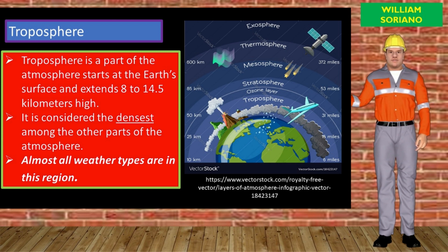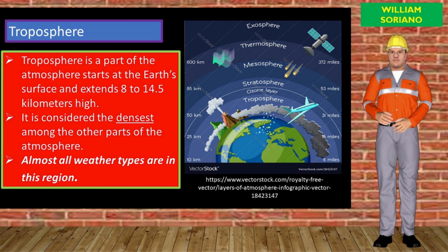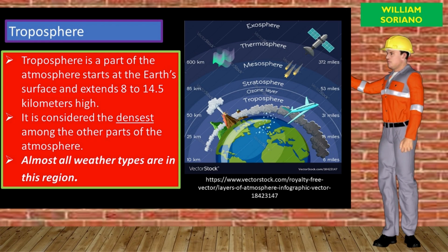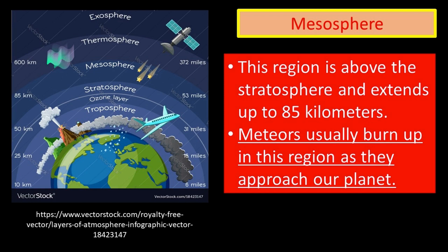The Troposphere is considered the densest among the other parts of the atmosphere, and almost all weather types occur in this region. Number two, the Stratosphere. Above the Troposphere is the stratosphere, which extends up to 50 kilometers high. This is the region where we can find the ozone layer, which absorbs and scatters solar ultraviolet radiation. Number three, the Mesosphere. This region is above the stratosphere and extends up to 85 kilometers. Meteors usually burn up in this region as they approach our planet.